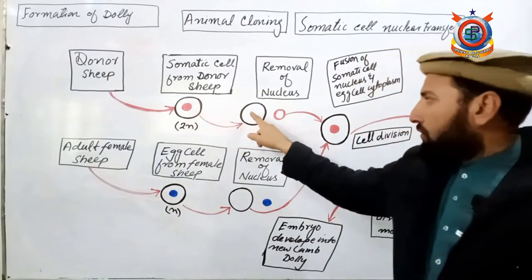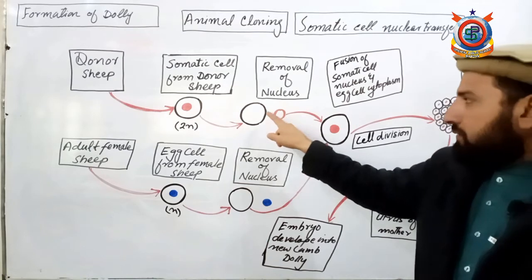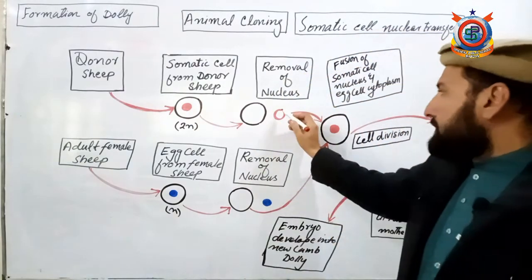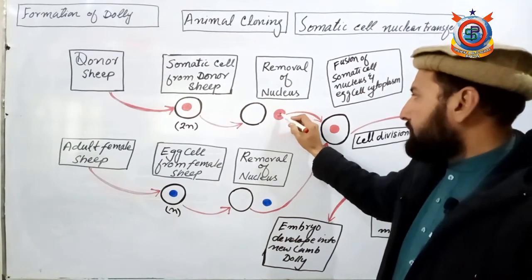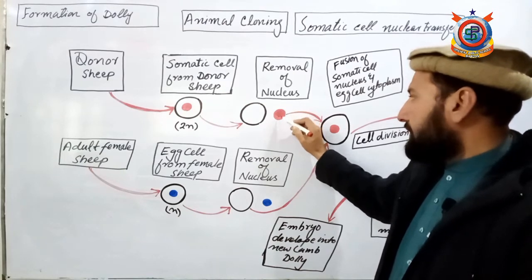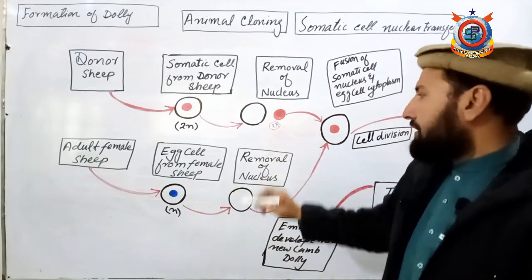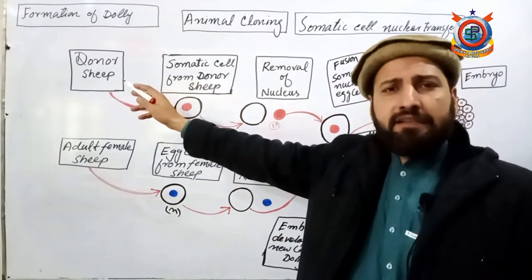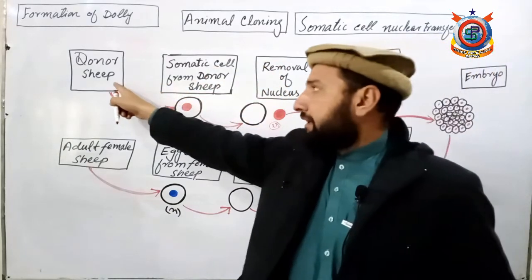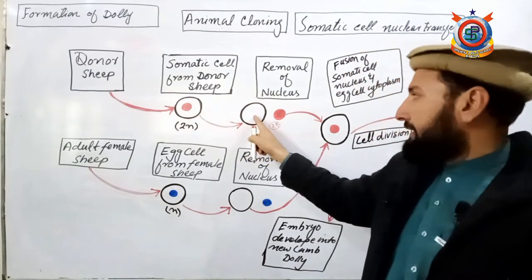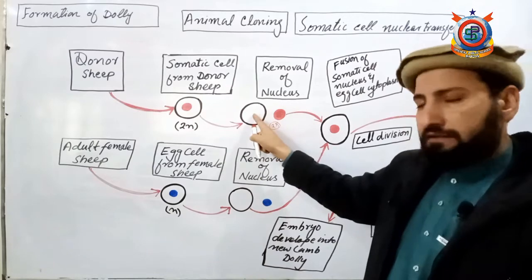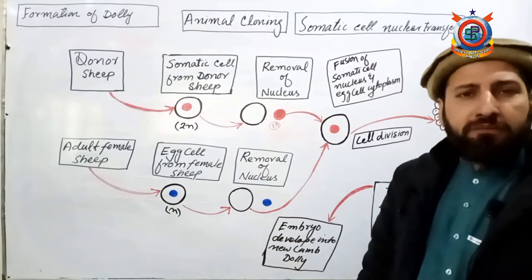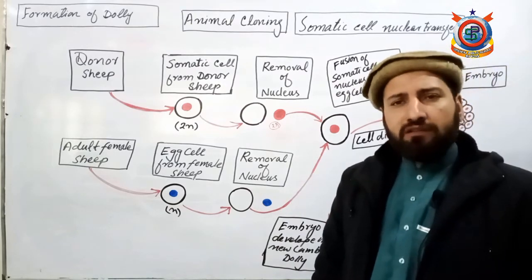Doosre step mein somatic cell se uska nucleus nikal diya jata hai. Tariqa ye hota hai ki cell se nucleus ko aleda kar diya jata hai. Is nucleus ke andar chromosomes mojud hote hain — is sheep ke jitne bhi chromosomes hain wo pure hamare paas aa jate hain. Ye nucleus diploid hota hai yani is ke andar full number of chromosomes mojud hote hain. Hume is somatic cell ka nucleus chahiye kyunki is nucleus mein is ki puri genetic makeup — pura DNA mojud hai — is body ki tamam khasusiyyat is DNA mein hain.